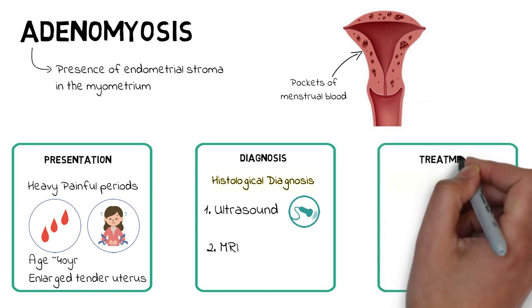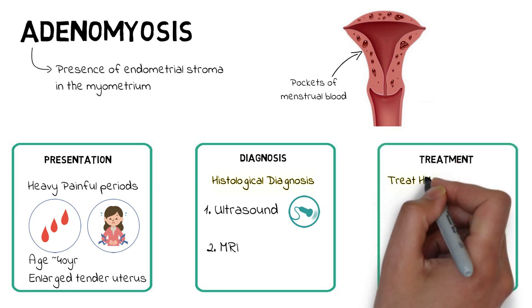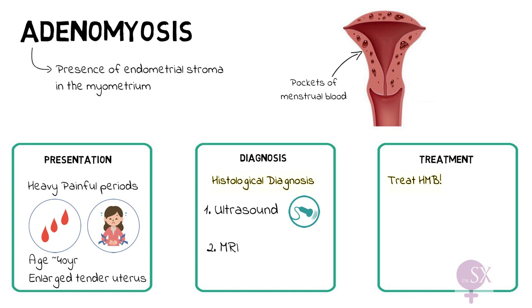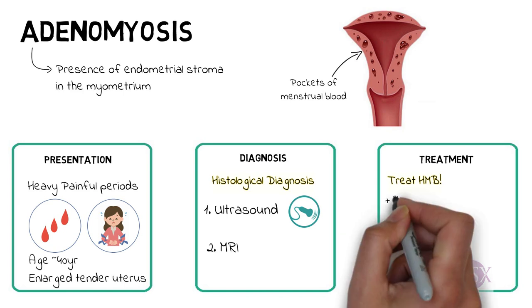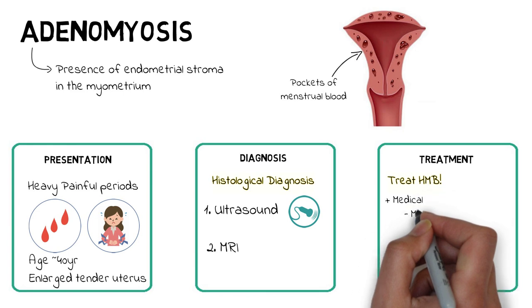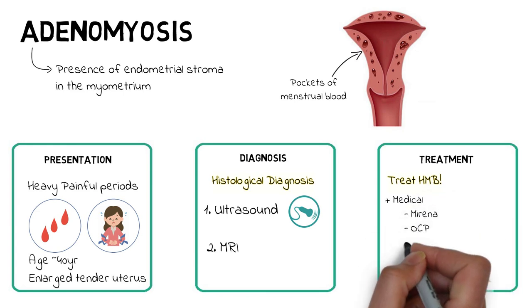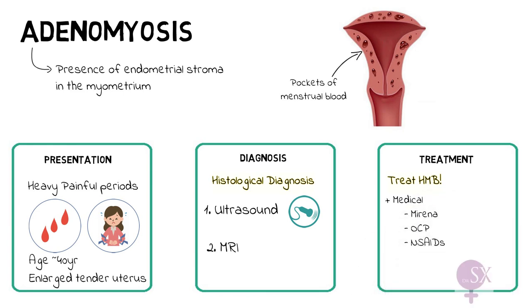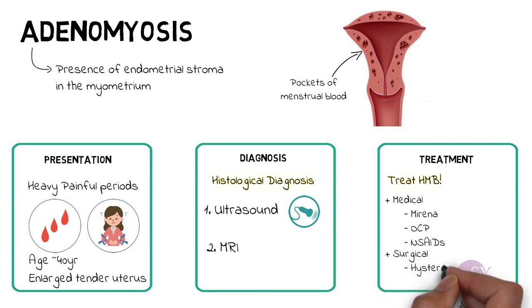Management of adenomyosis is based on treating the heavy menstrual bleeding. We have medical options here, like the Mirena, the oral contraceptive pill, and NSAIDs. In severe heavy menstrual bleeding, we can also opt for a hysterectomy.